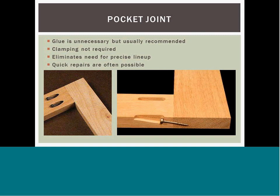A pocket hole joint, or pocket screw joinery, is made by drilling a hole at an angle — usually 15 degrees — into one workpiece, and then fastening it to a second workpiece with a self-tapping screw. Because there is an internal clamp holding the joint together, glue is unnecessary but usually recommended for most common joints. Clamps are not required because the internal screw holds the joint while the glue dries. This method requires only one hole to be drilled, limiting the need to line up mating workpieces as is required with dowel and mortise and tenon joints. Quick repairs are possible without completely disassembling the joint, and fixing or squaring furniture requires only drilling additional pocket holes and using screws to pull the two pieces together.